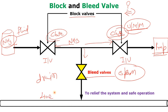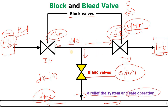This is the closed drain line, and from this line it will go to a closed drain tank. We do this to relieve the system and for safe operation. When we release all the explosive and toxic gas from this line, then only we can give our system for maintenance and other work. That is why this block and bleed valve is given in the pipeline — to relieve the system from toxic gases and for safe operation.